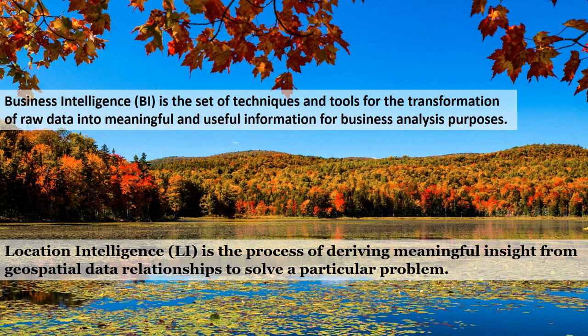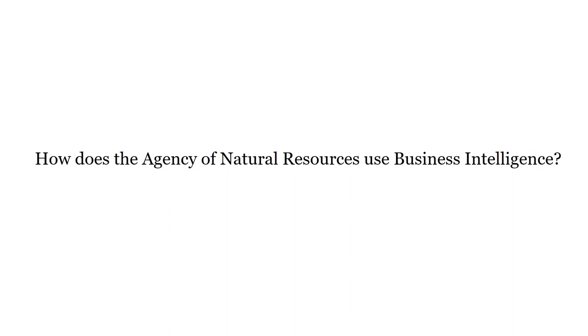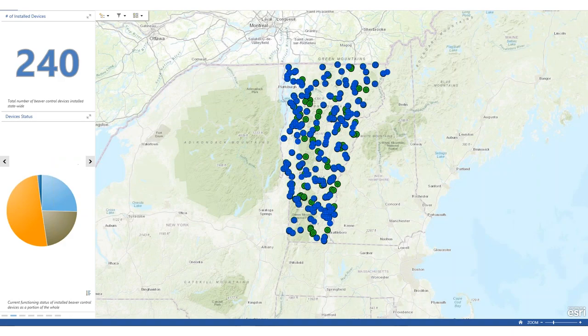We also have this notion of location intelligence, which is the process of deriving meaningful insight from geospatial data relationships to solve a particular problem. There are some GIS professionals on this webinar that use location intelligence all the time. But business intelligence takes it one step further, using those locations to solve issues or talk about goals and setting bars to reach those goals. Now, how does the Agency of Natural Resources use business intelligence? We use it in different ways, a lot of them consuming data collected out in the field.